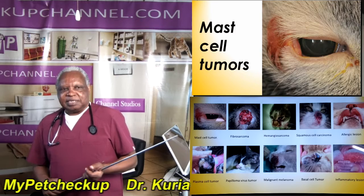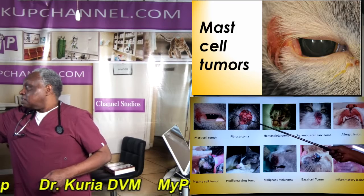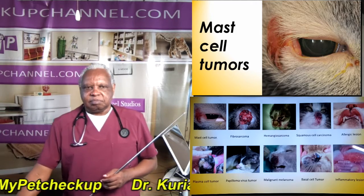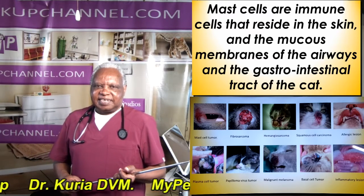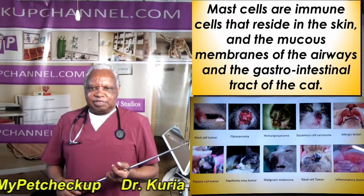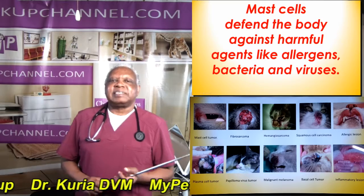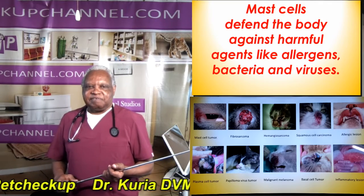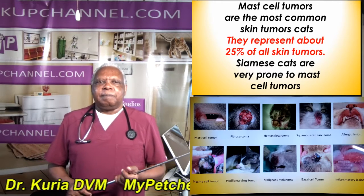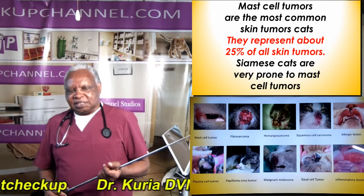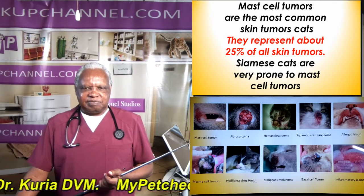Let's look at the mast cell tumor — that's the mast cell tumor right there, right there at the head. Mast cells are immune cells that reside in the skin and the mucous membranes of the airways and gastrointestinal tract of the cat. Mast cells defend the body against harmful agents like allergens, bacteria, and viruses. Mast cell tumors are the most common skin tumors in cats. They represent about 25% of skin tumors.